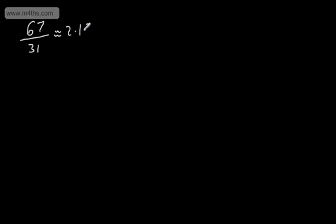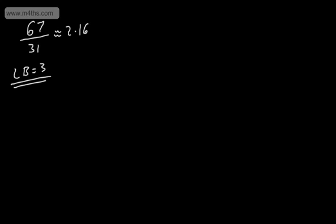In the last example, we had 67 time periods — that was the sum of all of the activities. We divided this by the critical time and it gave us approximately 2.16. This told me that the lower bound of workers required was 3. We round up to the next integer, so we couldn't complete the project in the critical time with less than 3 workers. Sometimes we'll be asked to complete the project with fewer workers than that lower bound, and clearly this is going to have a knock-on effect to the project time and also the activities starting on time. So let's look at an example of this.